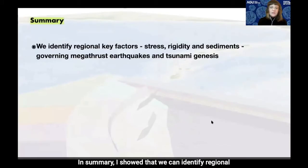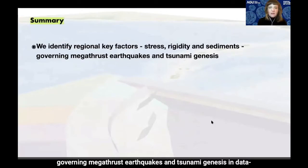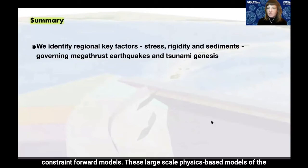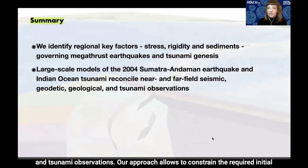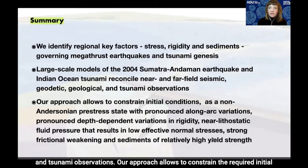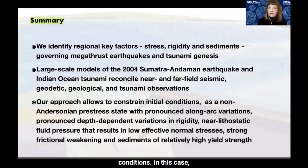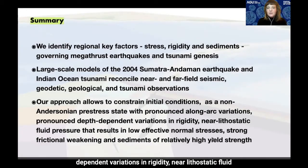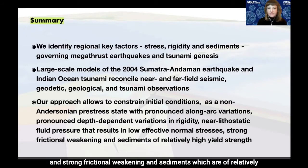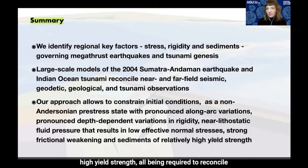In summary, I showed that we can identify regional key factors — stress, rigidity, and the strength of sediments — governing megathrust earthquakes and tsunami genesis in data-constrained forward models. These large-scale models of the 2004 Sumatra-Andaman earthquake and Indian Ocean tsunami reconcile near- and far-field seismic, geodetic, geological, and tsunami observations. Our approach allows constraining initial conditions: we find a non-Andersonian pre-stress with pronounced along-arc variations, depth-dependent rigidity variations, near-lithostatic fluid pressure resulting in low effective normal stresses, and strong frictional weakening. Sediments of relatively high yield strength are required to reconcile all independent observations.